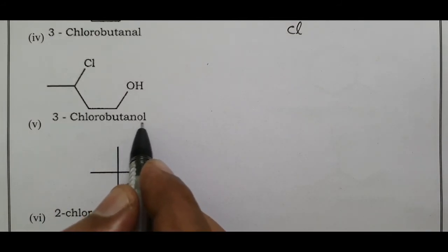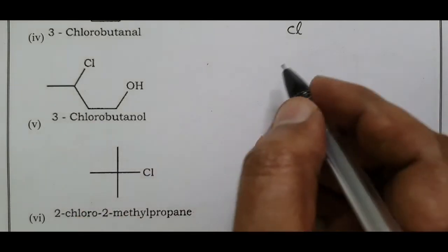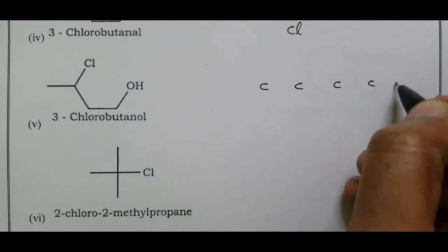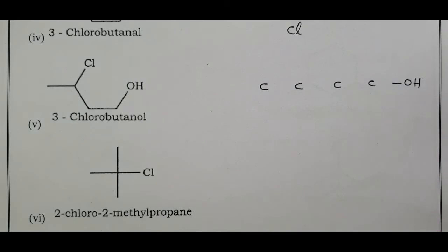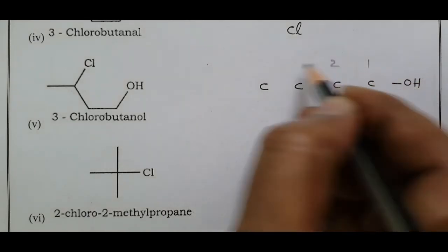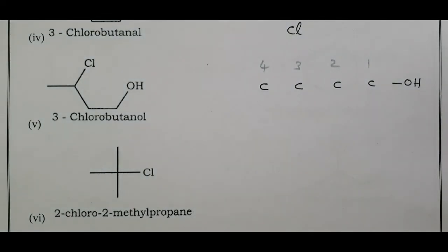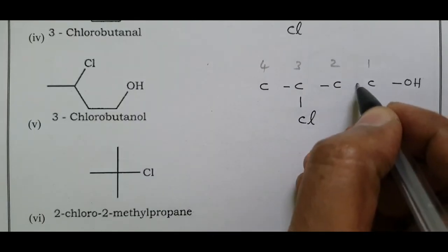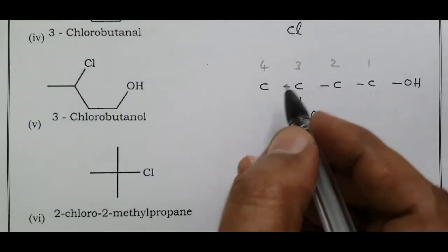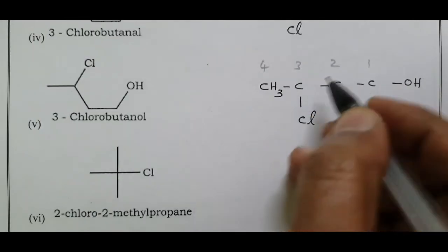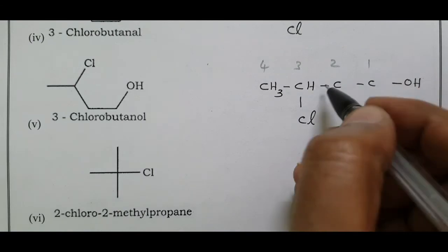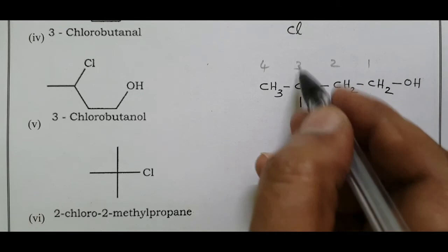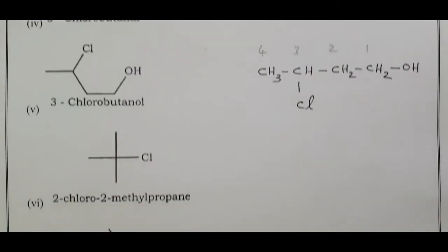How many carbons? Four carbon atoms — numbered 1, 2, 3, 4. The chlorine is on carbon three. Carbon four is the last carbon. Number from carbon one (aldehyde end): 1, 2, 3. Carbon makes four bonds total, so 3-bond carbon has 1 hydrogen; 2-bond carbon has 2 hydrogens. The compound is 3-chlorobutanal.